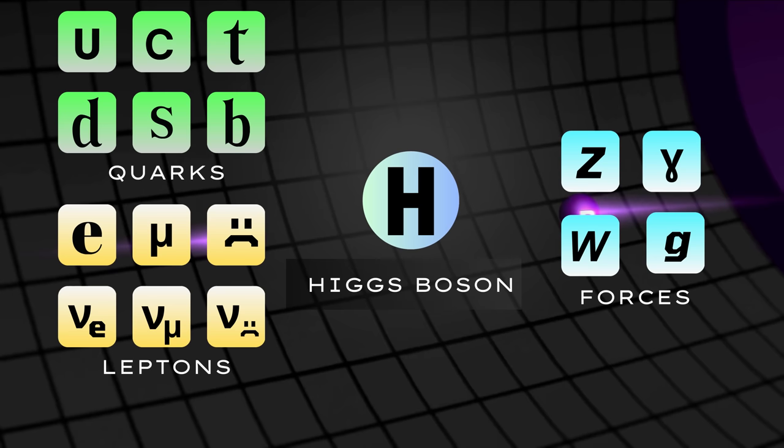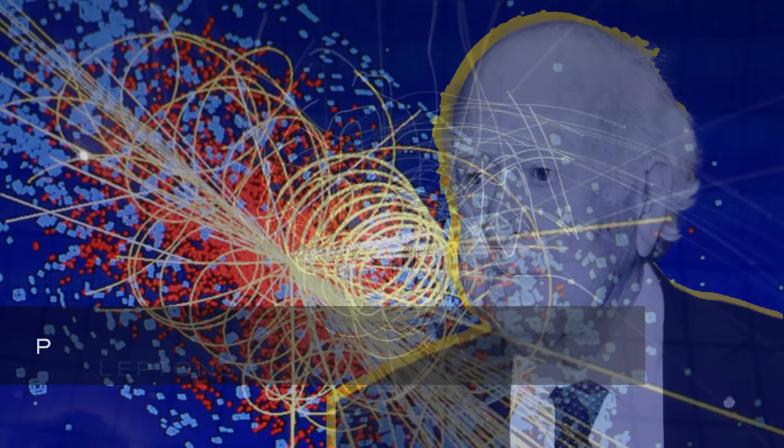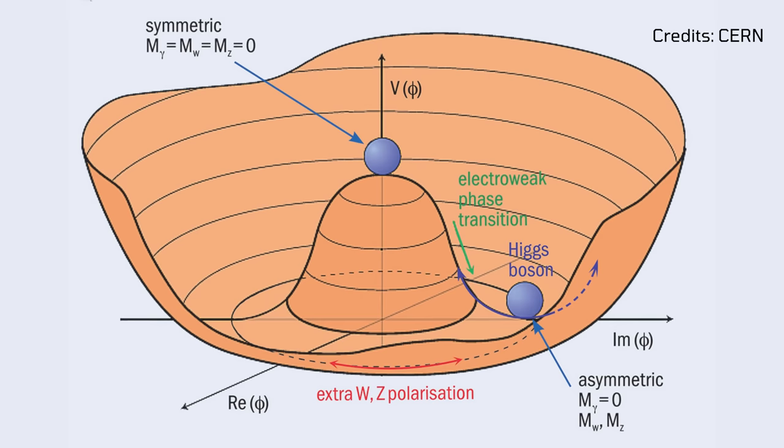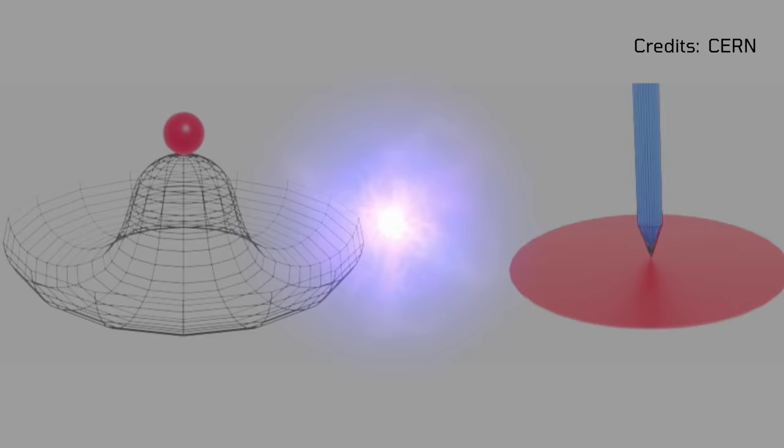The Higgs boson, a fundamental particle in the standard model of particle physics, was first theorized by physicist Peter Higgs in 1964. This particle is associated with the Higgs field, an invisible energy field that permeates the entire universe.